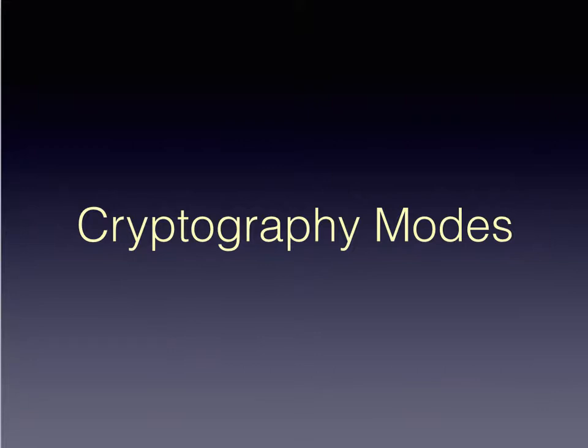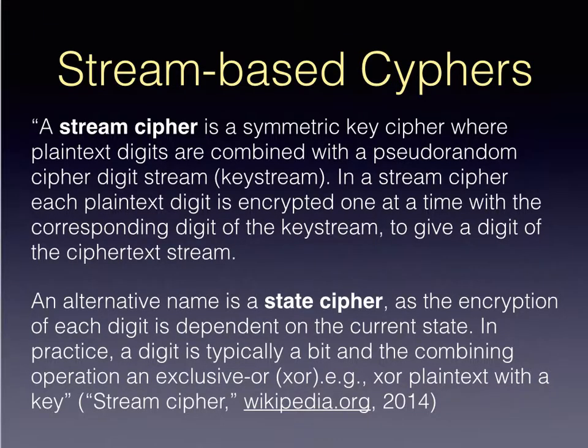Now we're going to look at cryptography modes. The first one is stream-based ciphers. A stream cipher is a symmetric key cipher where, as the information is input into the algorithm, it is immediately encrypted instead of going through multiple cycles. It's combined with a pseudo-random cipher digit stream or key. Each plaintext digit is encrypted one at a time with the corresponding digit of the key stream.